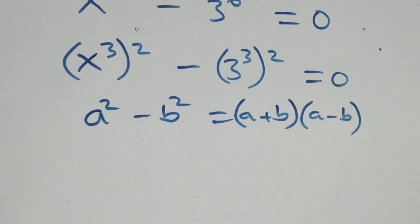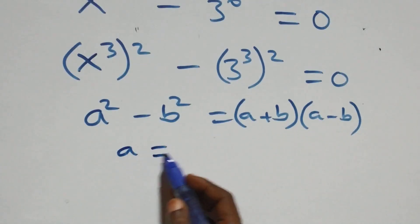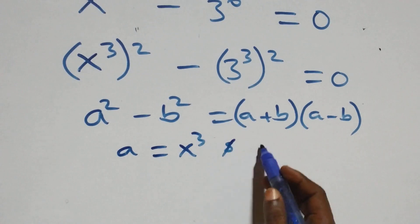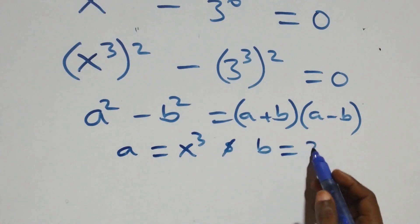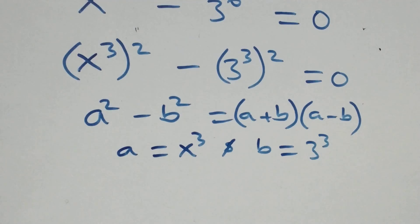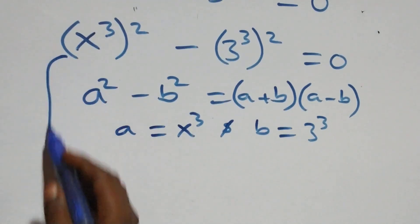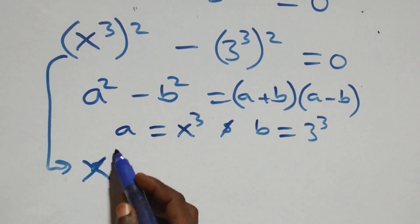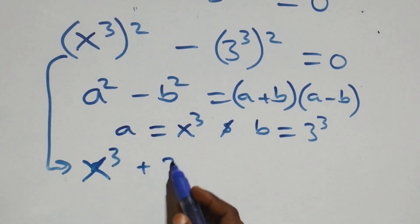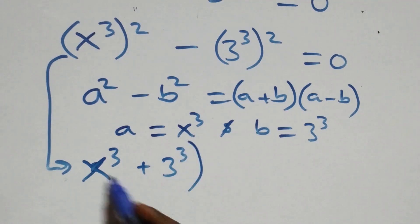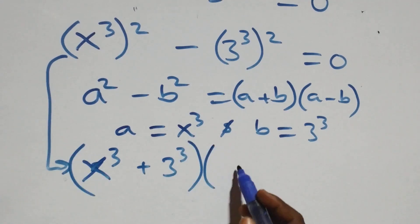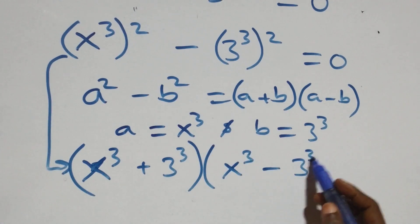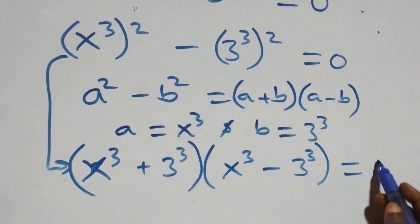Here, a stands for x raised to power 3 and b stands for 3 raised to power 3. So this becomes x raised to power 3 plus 3 raised to power 3, in brackets, times x raised to power 3 minus 3 raised to power 3, in brackets, equals 0.